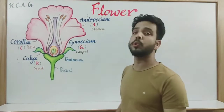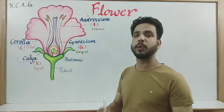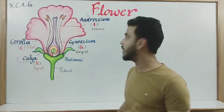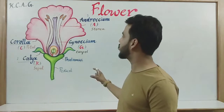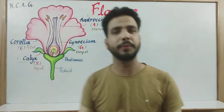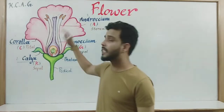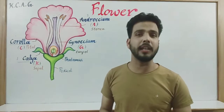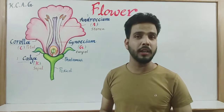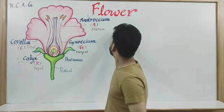In this video we are going to talk about the structure of a flower and its reproductive parts. I will tell you about the structure and different kinds of floral parts. I will start with KCAG — the 4 major parts of a flower: K, C, A, and G.